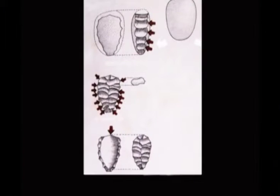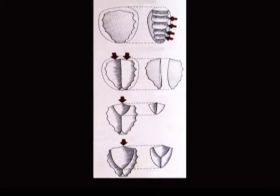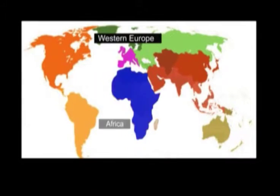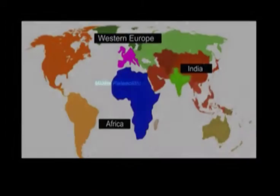The Levalloisian tradition is predominantly represented by flake tools, which are produced by using the Levalloisian tool-making technique. It requires a careful preparation of the core. The flakes are detached from the specially prepared cores. This flake tradition is found well in Western Europe, Africa, and India.